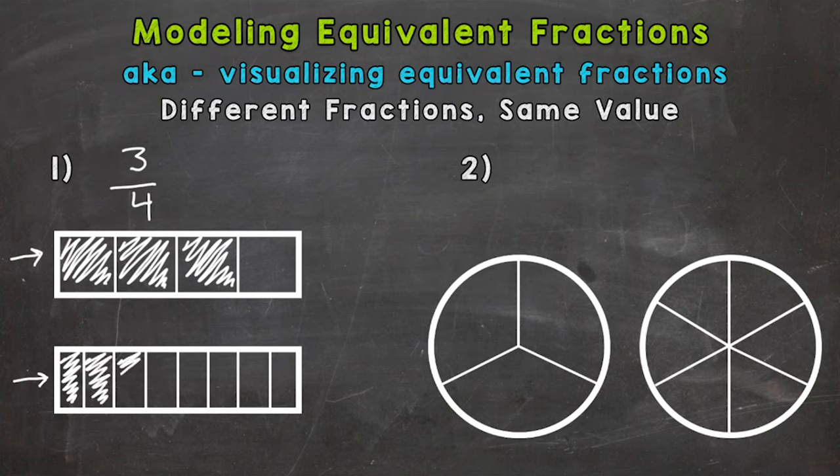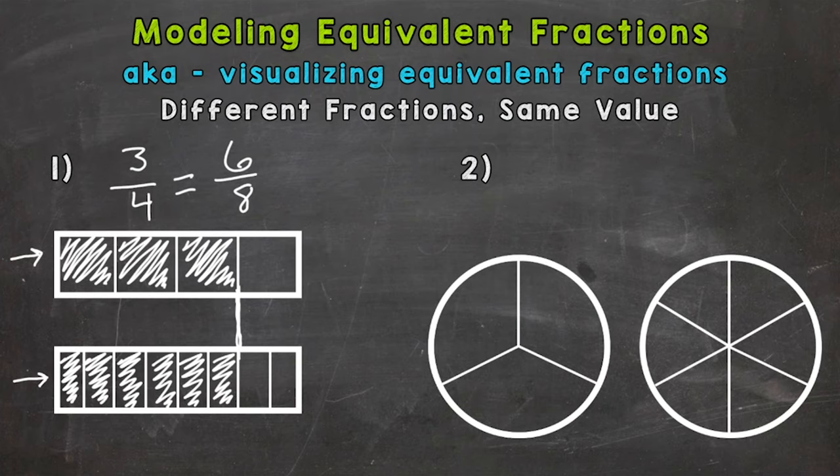Two-eighths, three-eighths, four-eighths, getting closer, five-eighths, and six-eighths. And we can see that they're filled in the same exact amount here. So the equivalent fraction is six-eighths. Now we modeled those equivalent fractions.